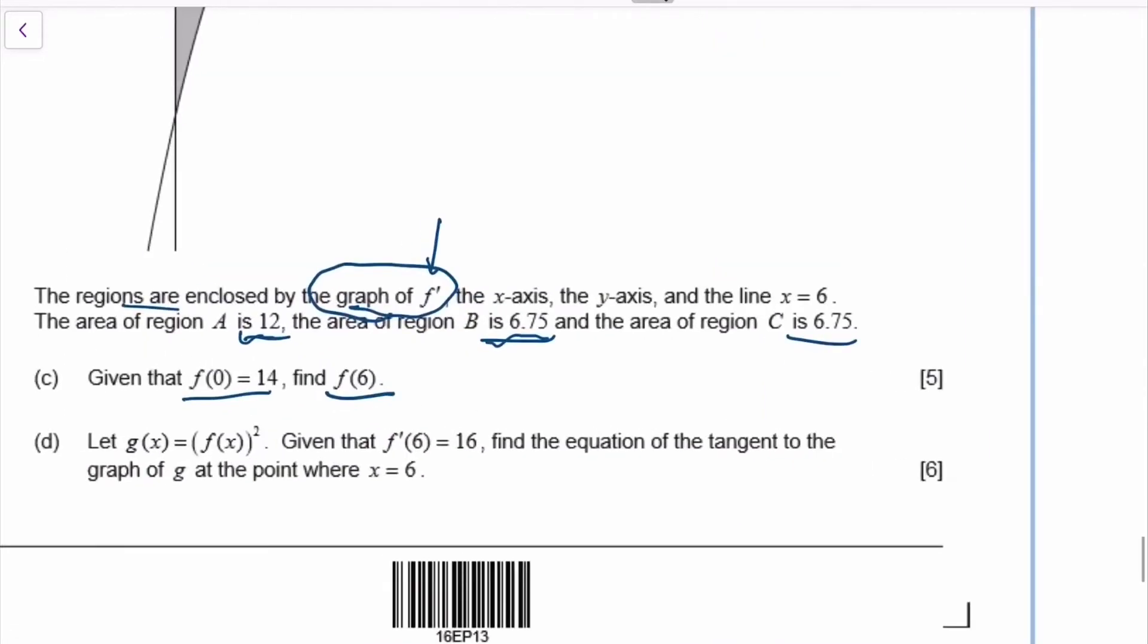And somehow they give me F(0) and I'm supposed to find F(6). So if this is the first time you see this type of question, this is very tricky.